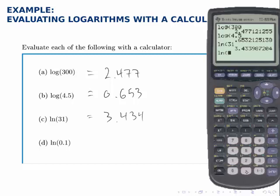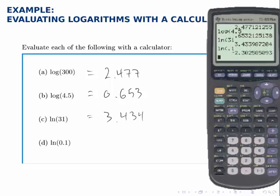In the last one ln 0.1 is negative 2.303.